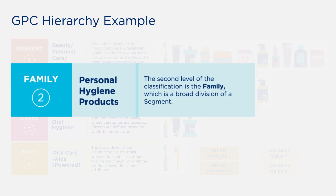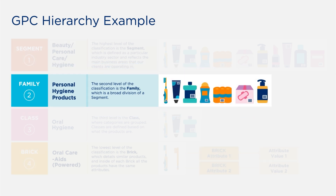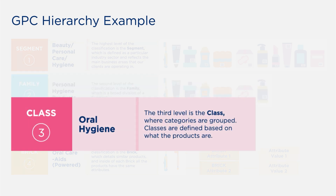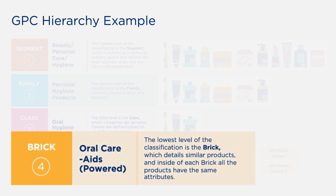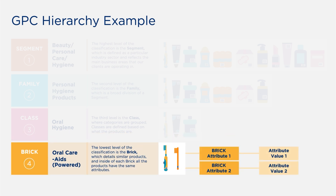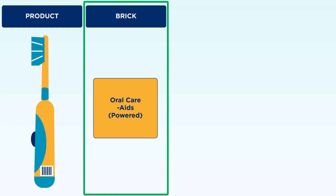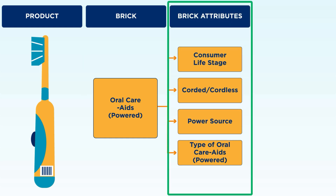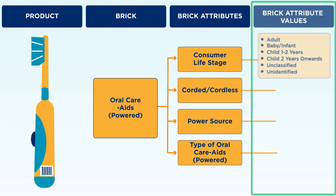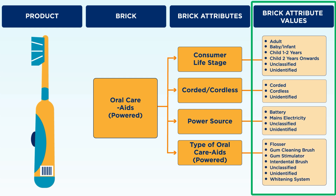Within each segment, there are families, which are groups of products that serve a common purpose. The most detailed level is the brick, which refers to individual products that share the same features or functions. GPC bricks can be further detailed using brick attributes and attribute values. Each brick may have one or more attributes, and each attribute has a set of mutually exclusive values that add depth by allowing queries about a brick's features.